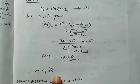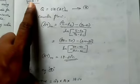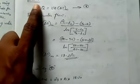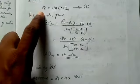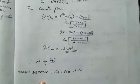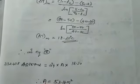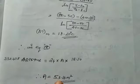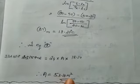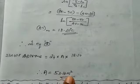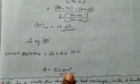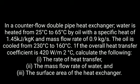We solve for area A using Q = U × A × delta Tlm, substituting all known values to get the surface area of the heat exchanger.